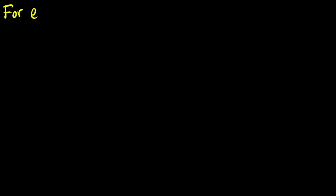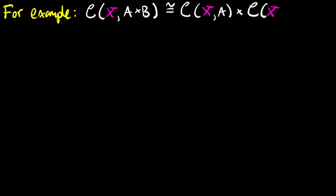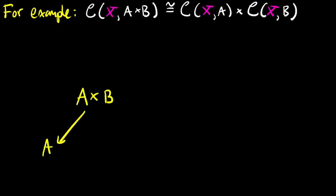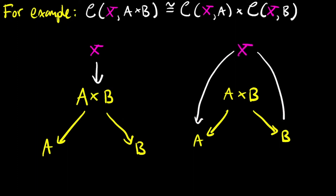The reason representable functors preserve limits is practically the definition of a limit. To get the idea, you can look at products, for example, and compare the morphisms from X into a product with the product of the morphisms of X into the constituent parts. So on the left-hand side, if you have a map from X into the product of A and B, then you can compose it with the projections to get a map from X into A and a map from X into B. On the other hand, if you have a map from X into A and X into B, the universal property, the definition of the product tells you you have a unique map from X into the product making the diagram commute.